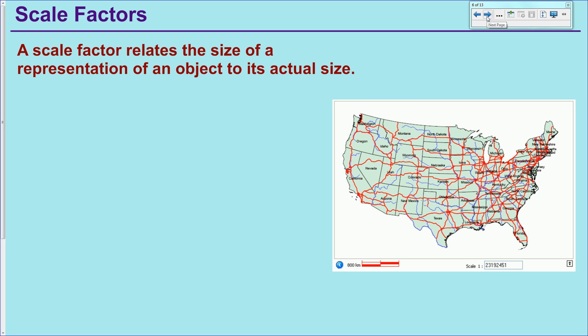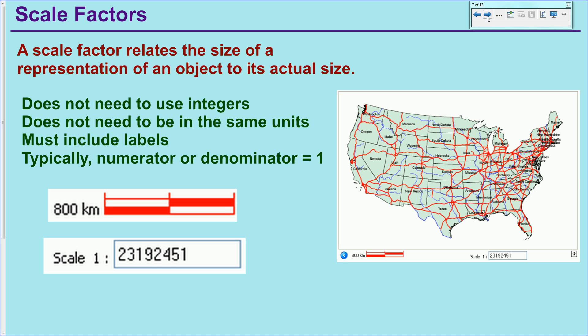The second topic today that we have to talk about is a scale factor. A scale or scale factor is something that relates a representation of an object, whether it's a drawing, a map, a model, whatever, to the actual size of the object. So it's just a conversion factor to relate the representation of the object to the actual object. Now there's a couple guidelines in writing a good scale or a good scale factor. You can see this map off to the right actually has two different sorts of scales. They have one scale that allows you to actually physically measure on the map with a ruler, and you can say, okay, this distance from here to here is 800 kilometers. How far would it be on the actual map?